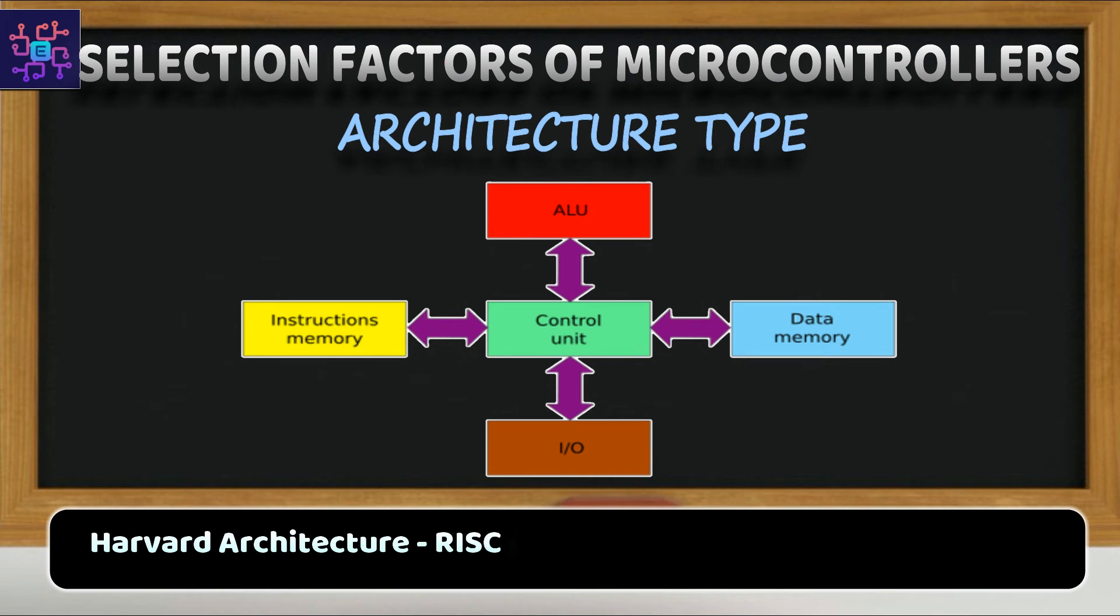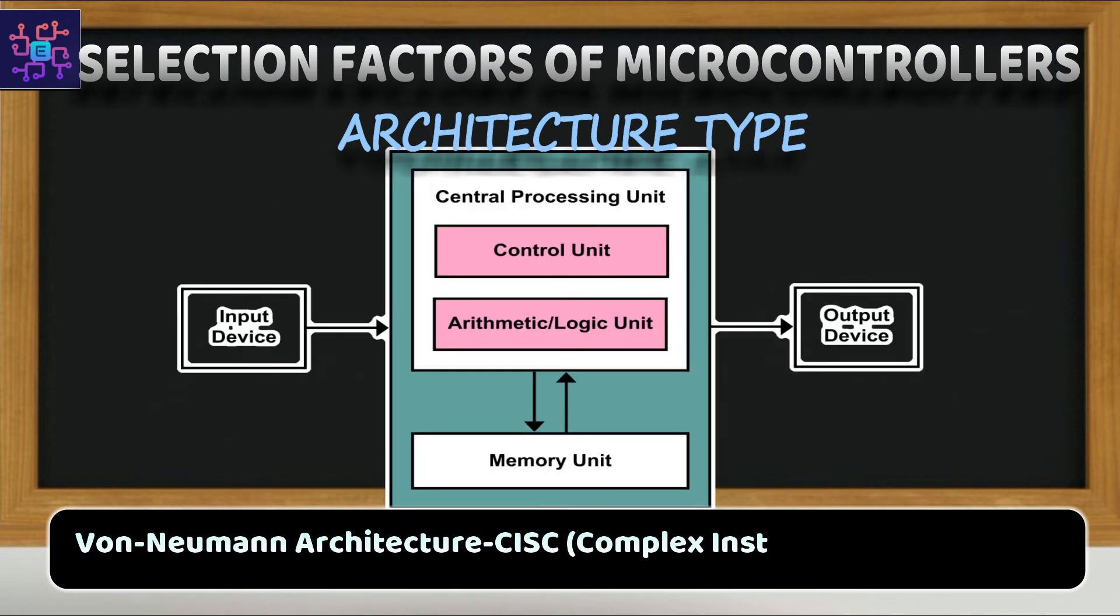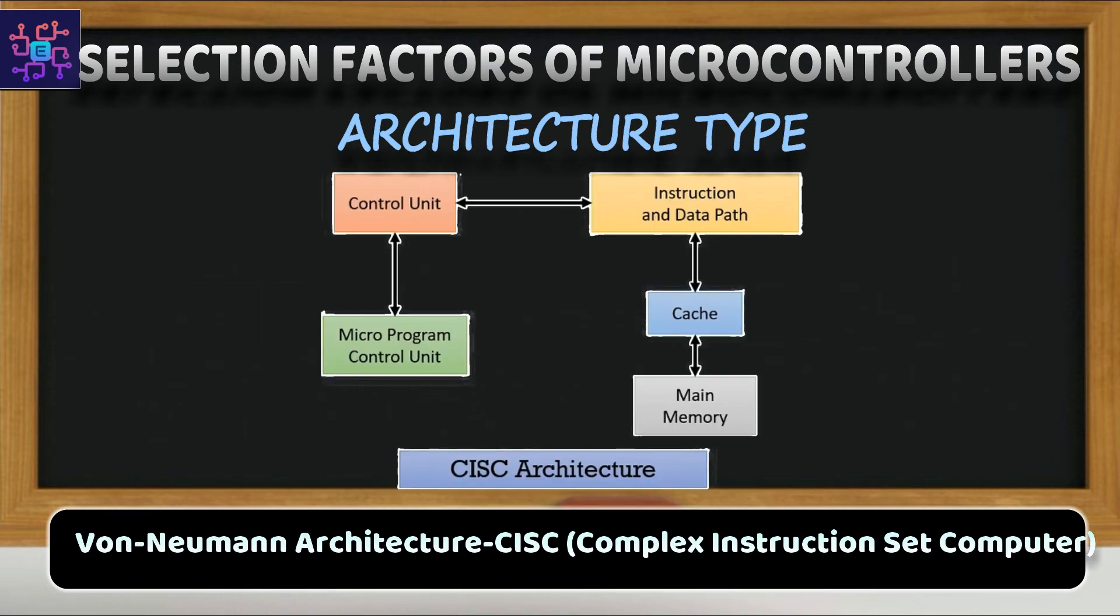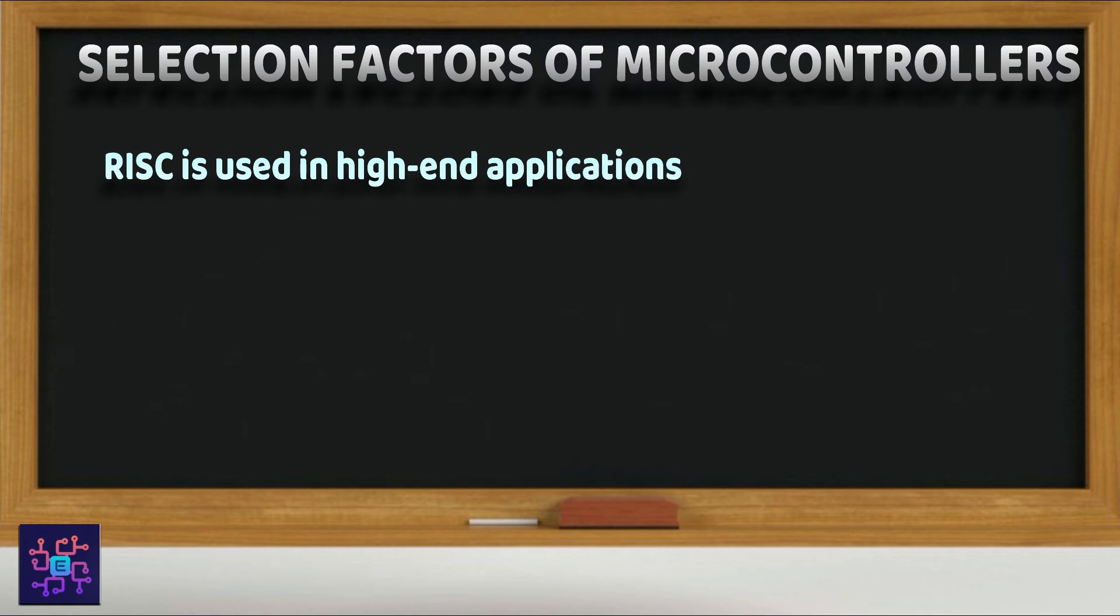Harvard architecture comes under RISC, Reduced Instruction Set Computer architecture, and von Neumann architecture comes under CISC, Complex Instruction Set Computer architecture. Depending on the application any one of the architecture types can be selected.